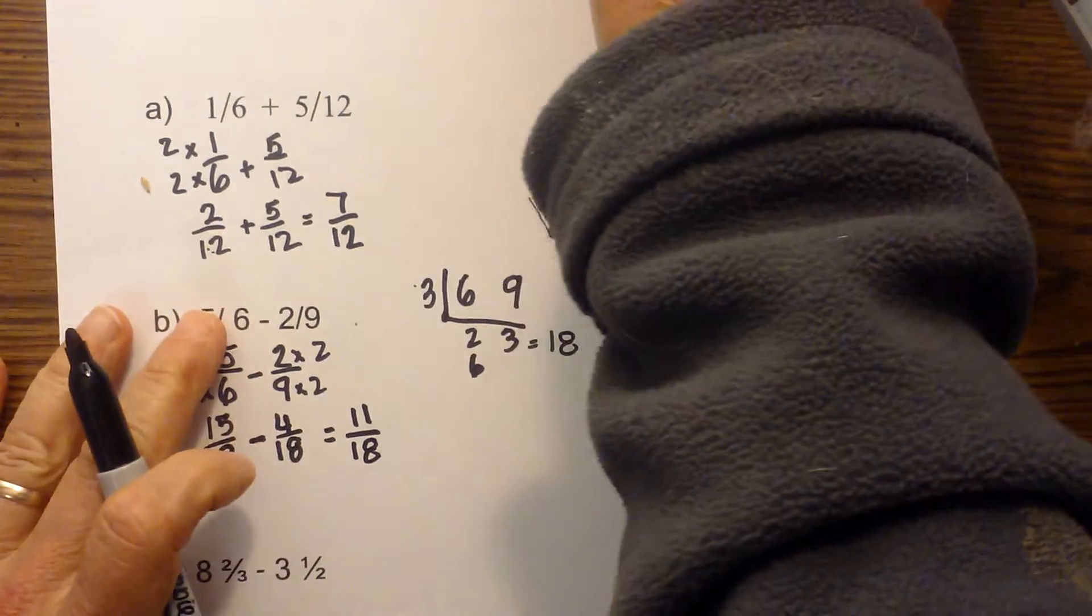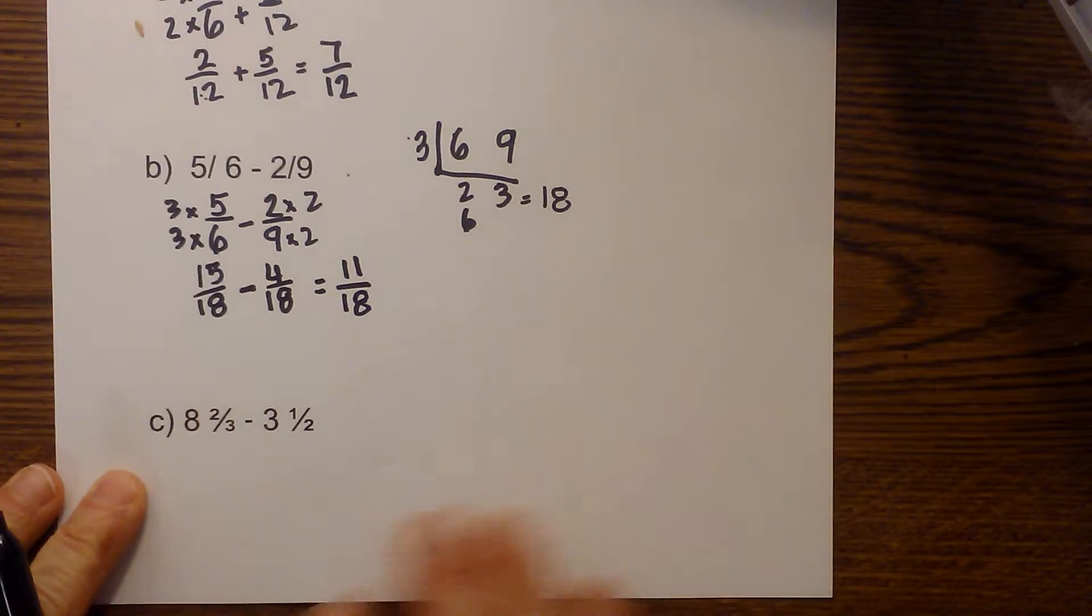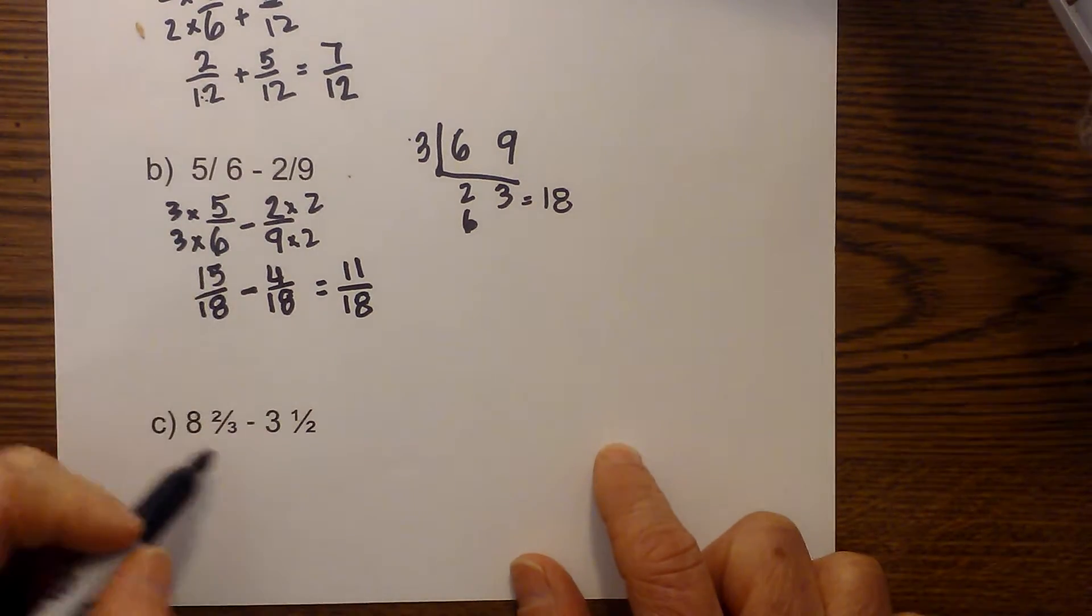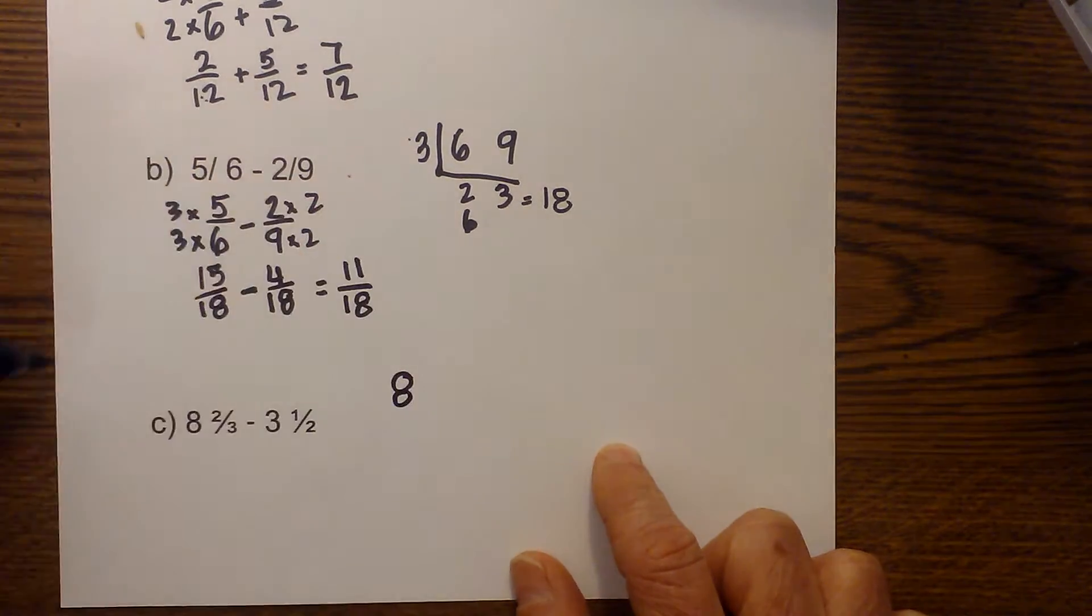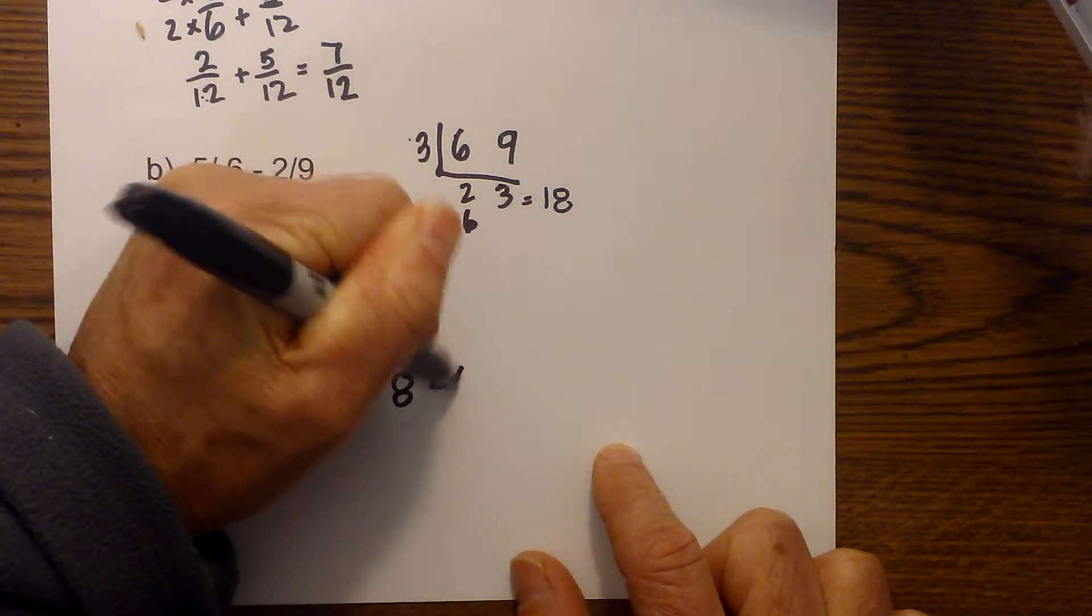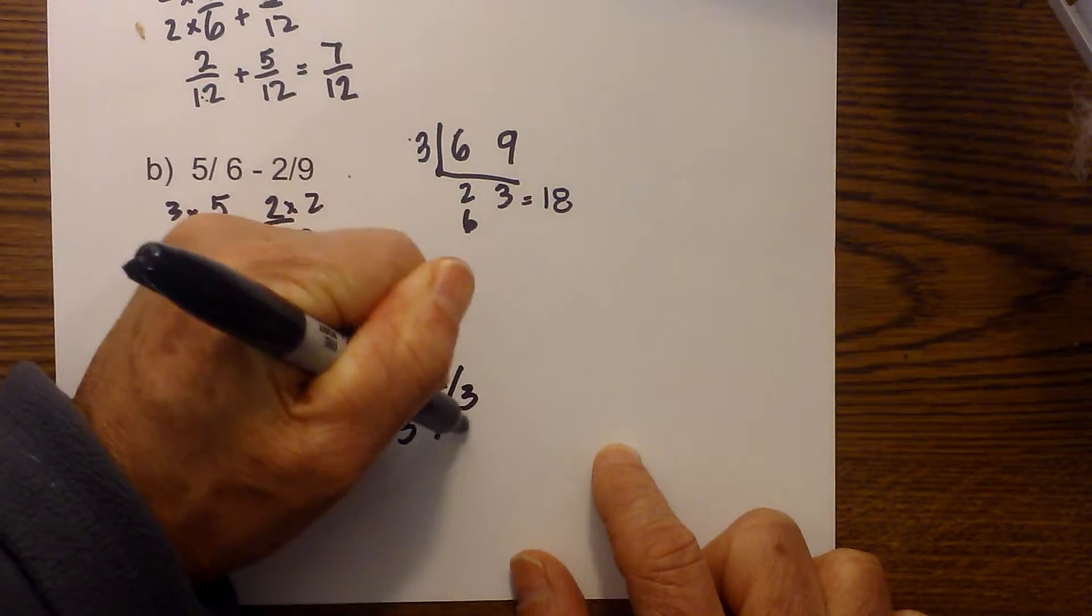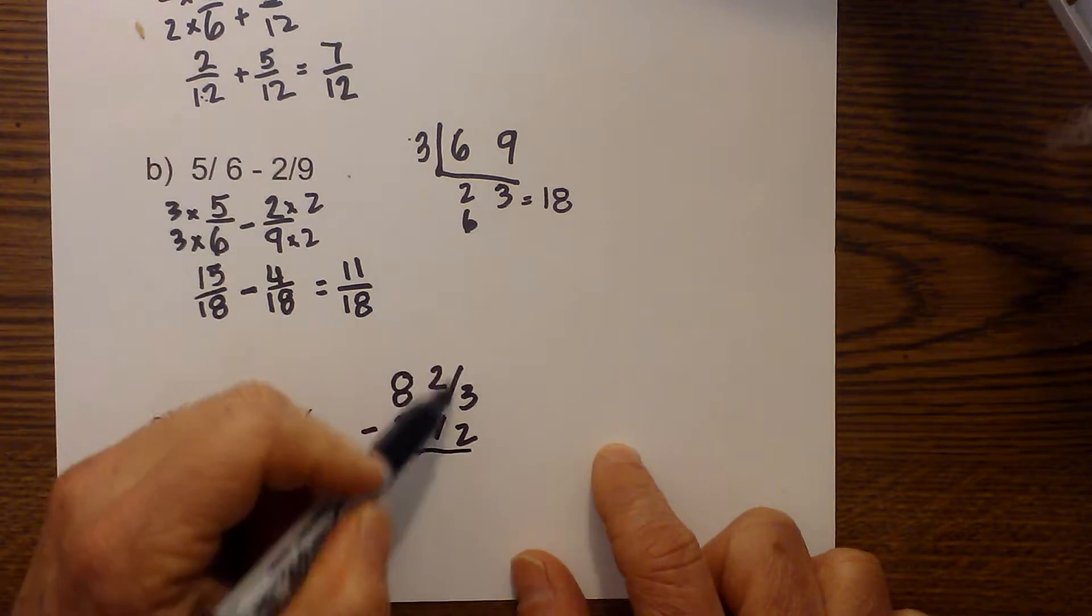Now let's do one with a little bit more of a mixed fraction. I'm going to put this in a little bit different form that I think is easier to see. Minus three and one half. So they do not have a common denominator. So what I need to do is find one.